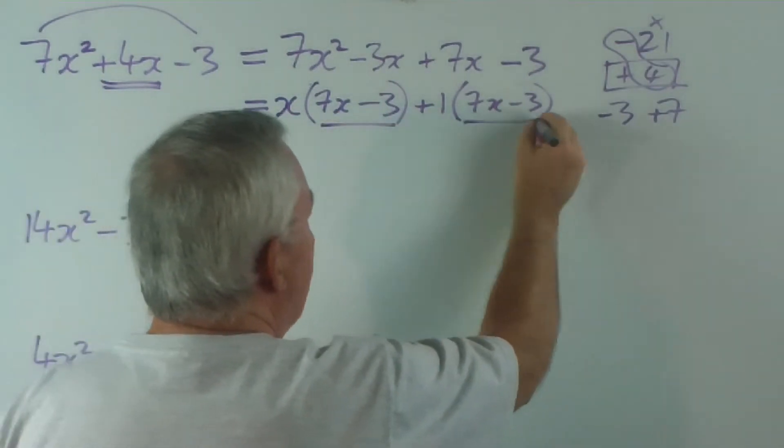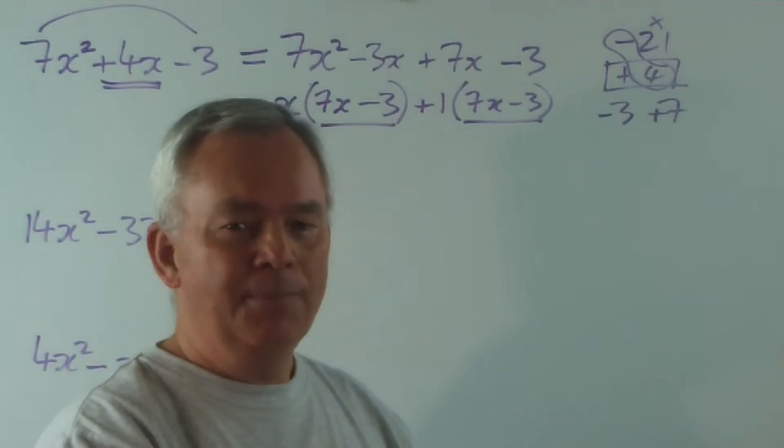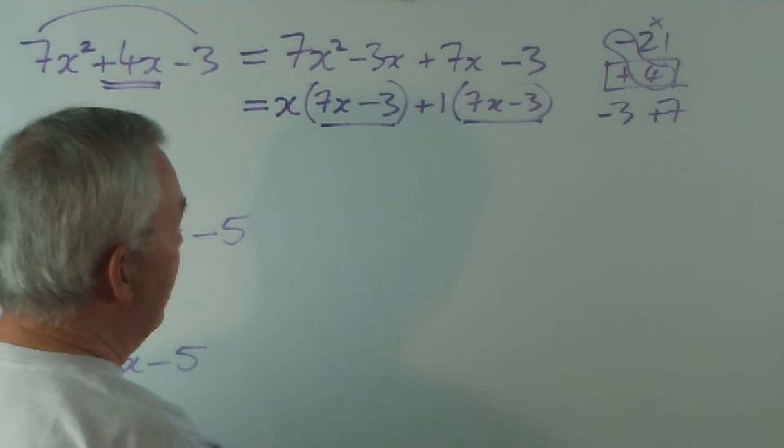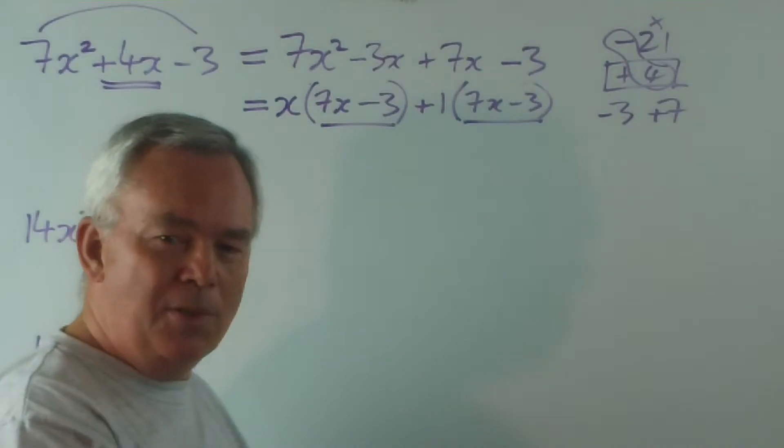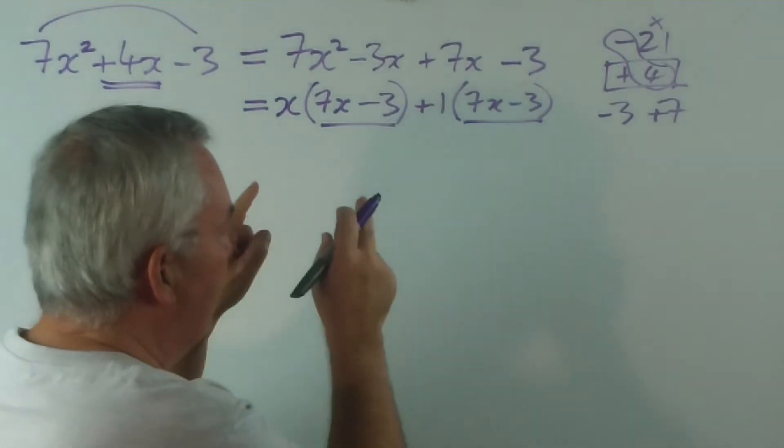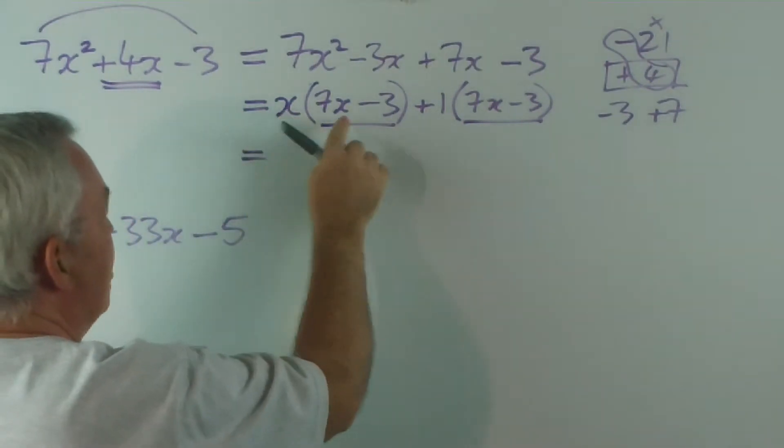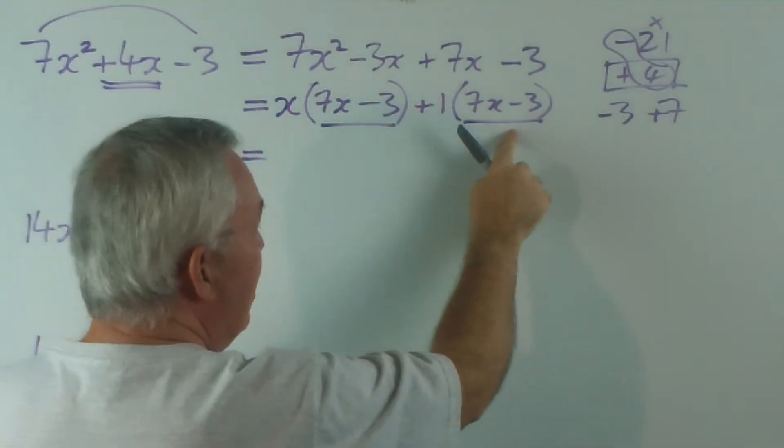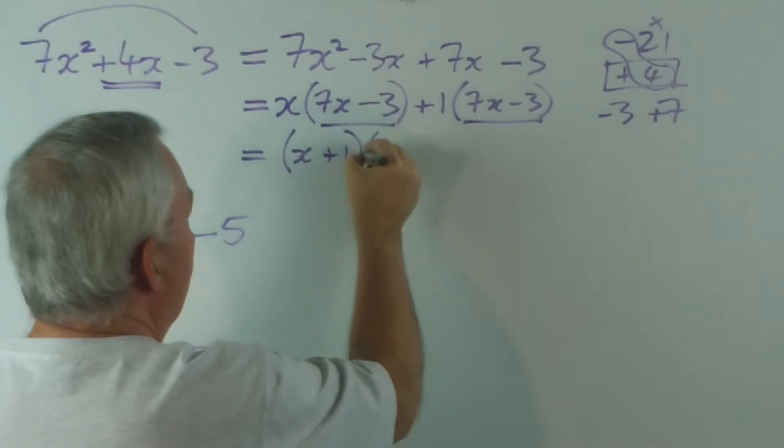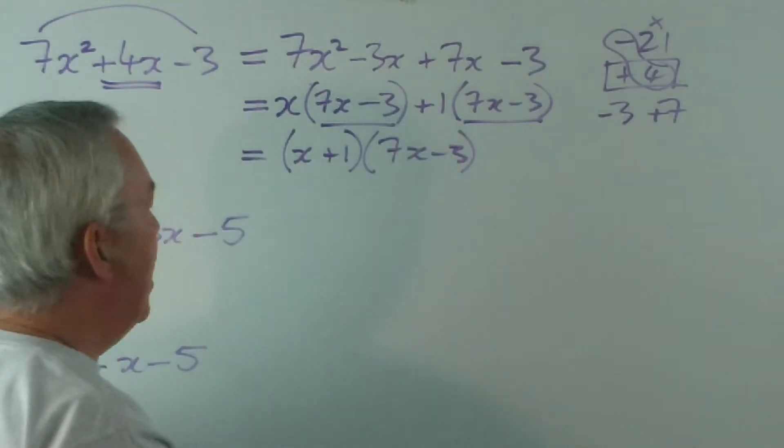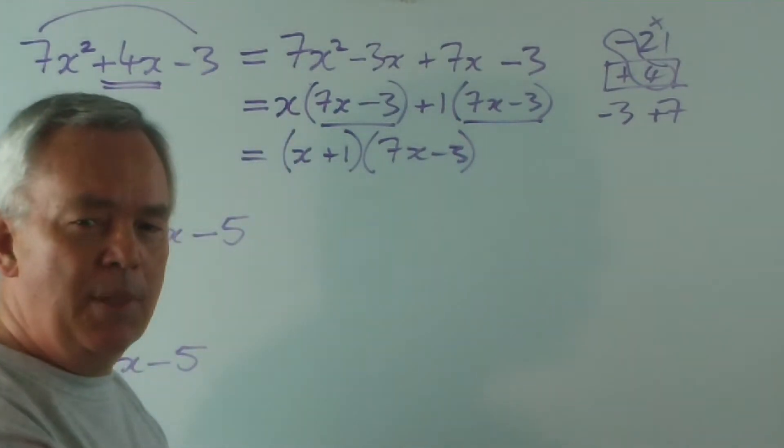At this stage, these should be identical, and if they're not, then something's gone wrong. You've made a mistake somewhere, and you should go back and check. This is a nice way to know that you're on target. And I think that's one of the reasons some teachers like it, and some students like it. Because, if they get to this stage, they know that they're probably right. Now, if I've got x lots of this, and I've got 1 lot of the same thing, then I've got x plus 1 lot of 7x minus 3. And that is this quadratic equation factorised, using the decomposition method.